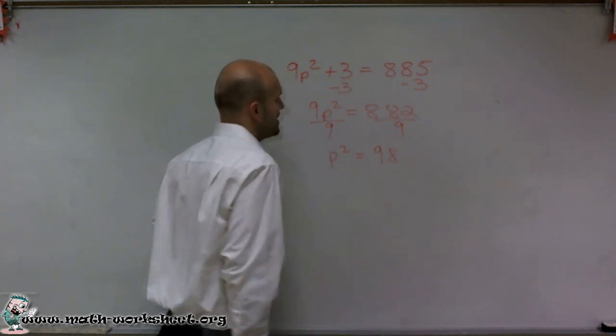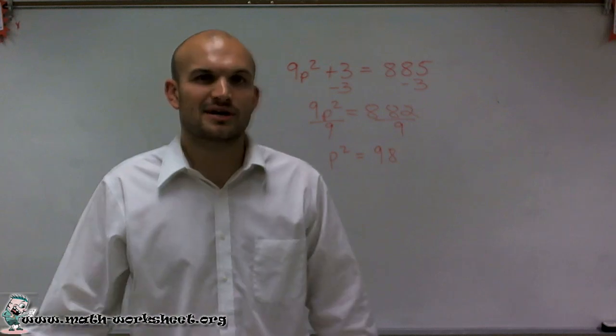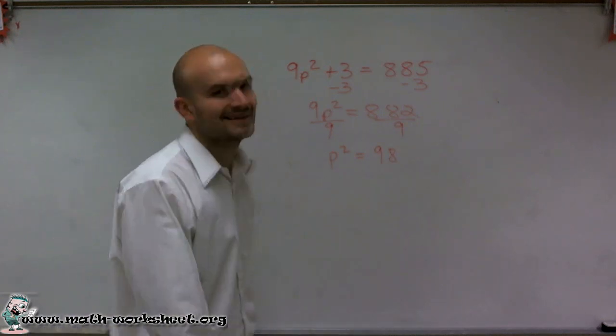And therefore I get p squared equals 882 divided by 9, which I'm going to math savant, which is 98. Check with your calculator. It's pretty close. It's right, all right?